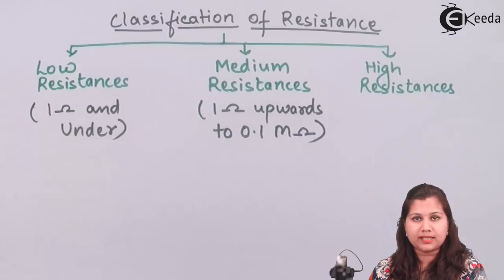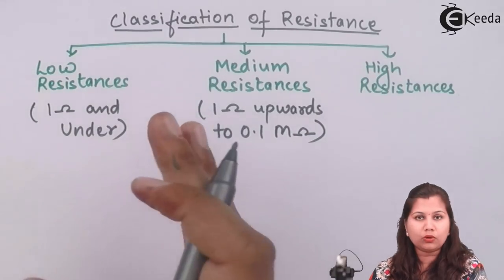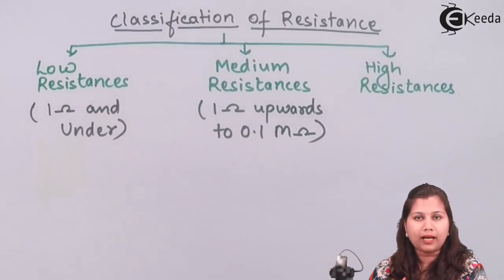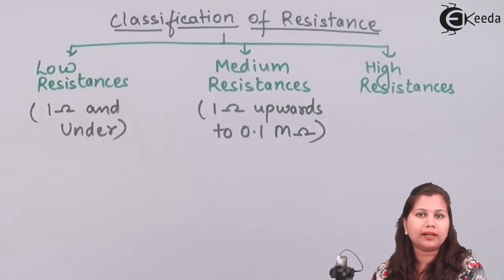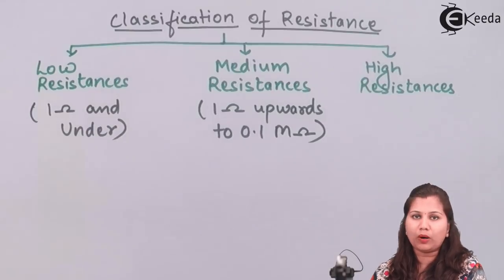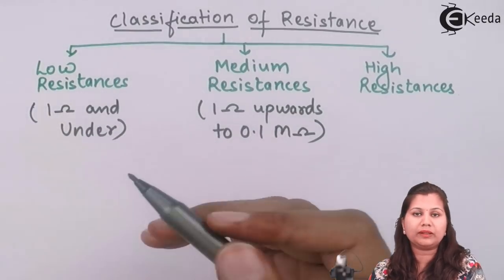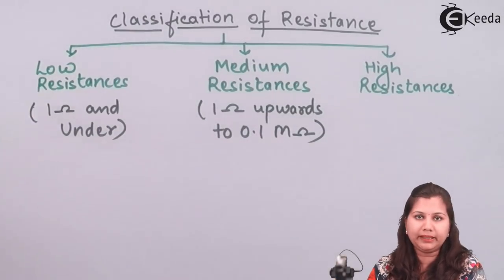All resistances having a value from one ohm upwards up to 0.1 mega ohm — that is, greater than one ohm and less than 0.1 mega ohm — are called medium resistances.